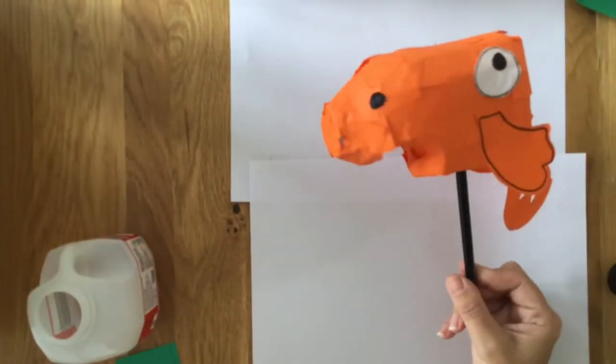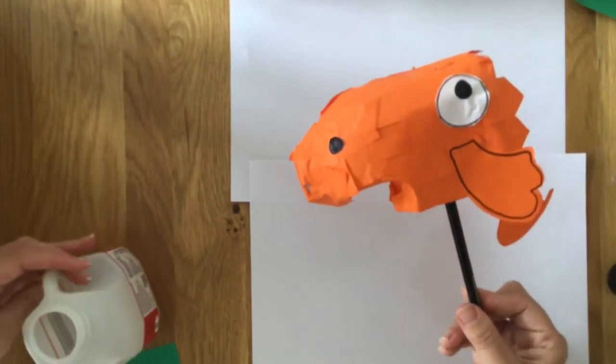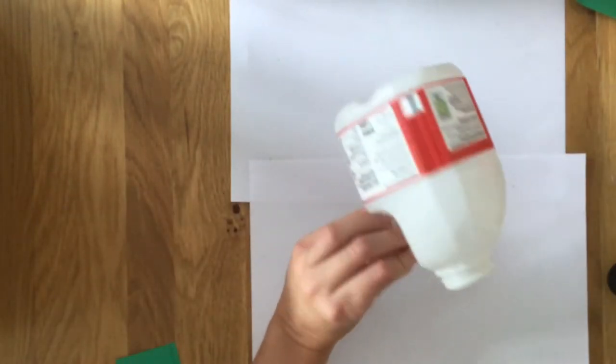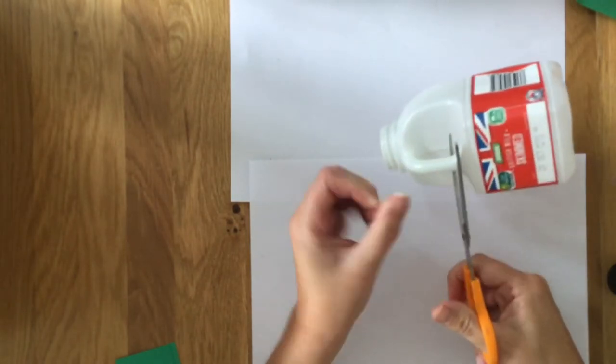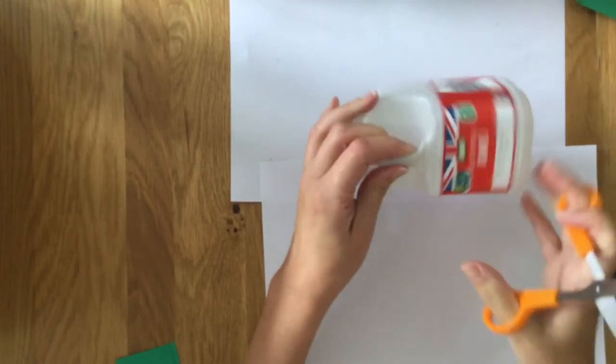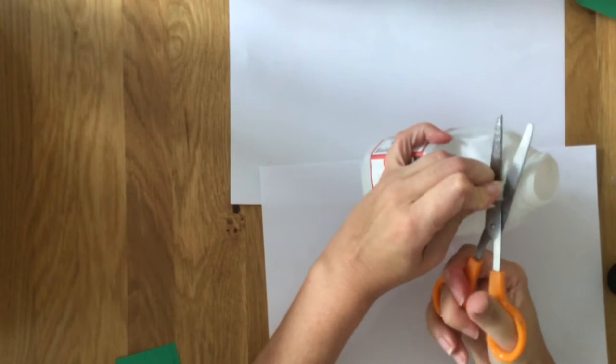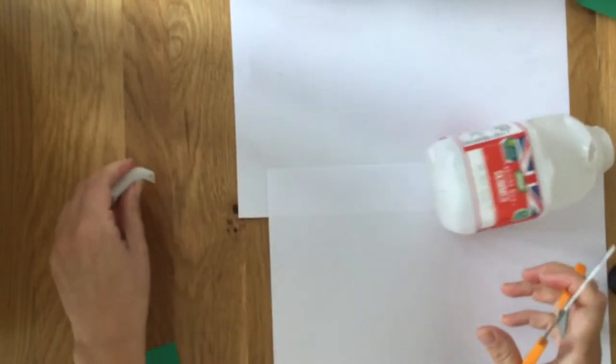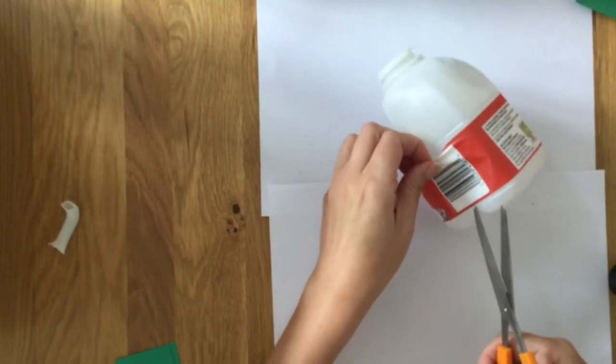So to start making our Fergal the dragon, we need to make some changes to our milk carton. First of all, we need to cut away the handle, and it's a little bit fiddly and dangerous to do, so you will need an adult to help you with this bit. Once you've got your handle off, you can take away the wrapper.